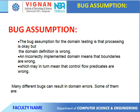The box assumption for domain testing: the processing is okay but the domain as defined is wrong and incorrectly implemented. Domain means that boundaries are wrong, which in turn means that control flow or predicates are wrong. There are many different types of bugs that can be domain errors.